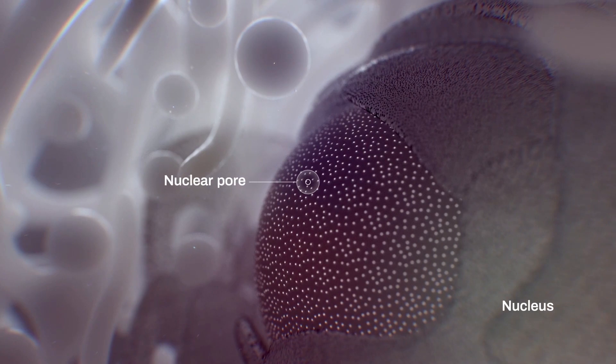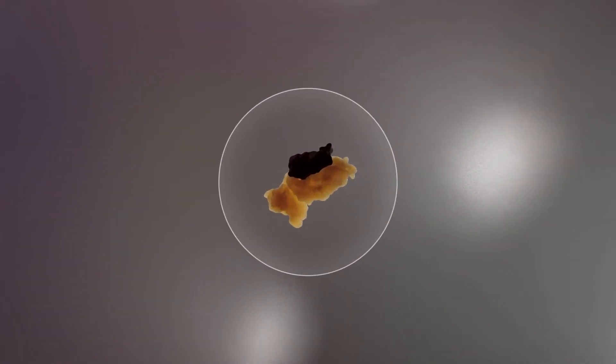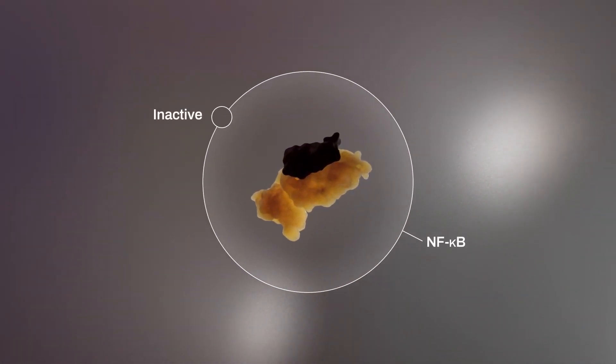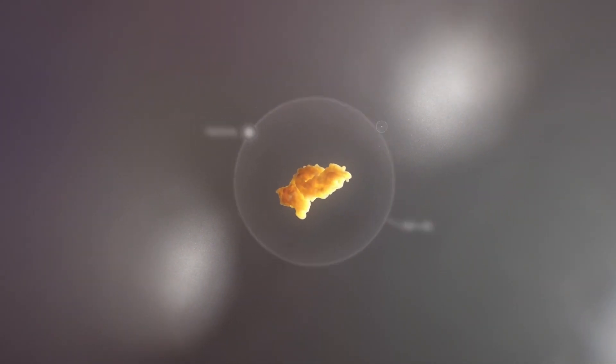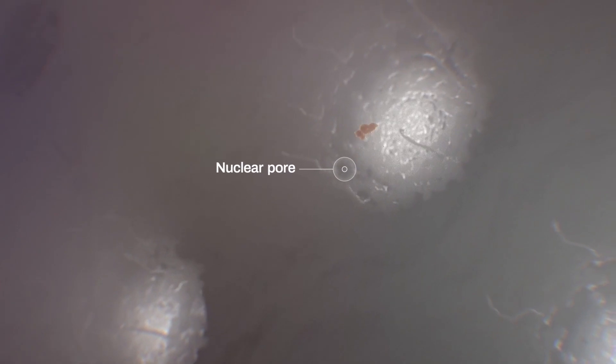When exposed to TNF-alpha and IL-1-beta, internal signaling occurs within the pro-inflammatory cells of the joint, leading to the activation of a molecule called NF-kappa-B and permitting its entry into the nucleus of the cell.